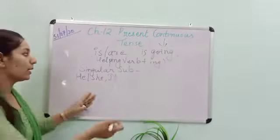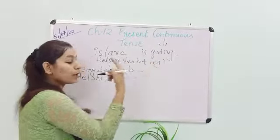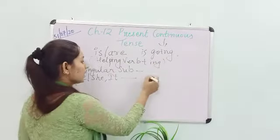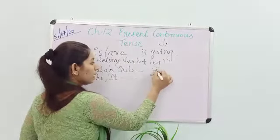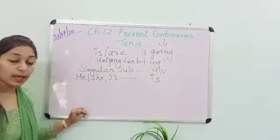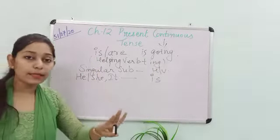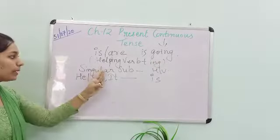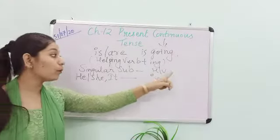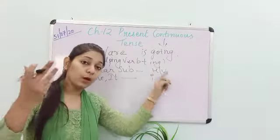To jab bhi a singular subject rahenge with that you have to use is. Aap ko is ki saath is use karna hai. That is your helping verb. And in the simple present tense chapter mein mein aapko bataya tha jab bhi aapka singular subject hoga, to hamein verb use karna hai plural.